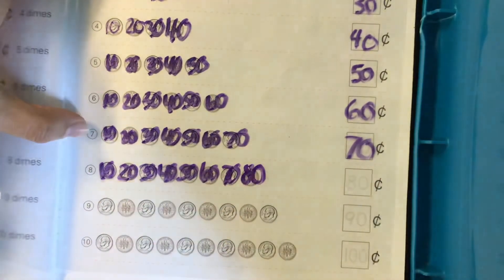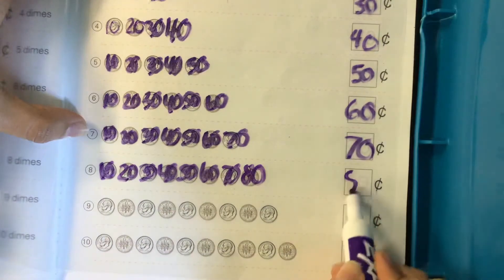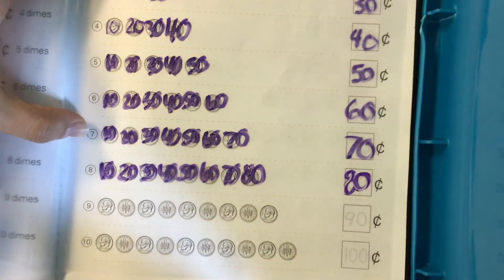seventy, eighty. There are eighty cents in row eight.